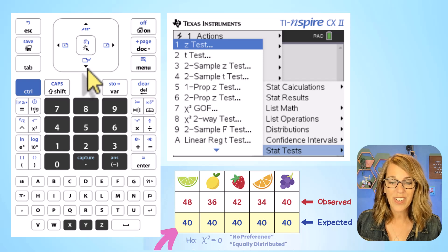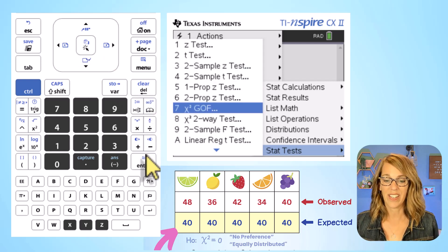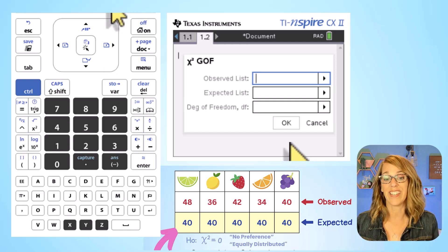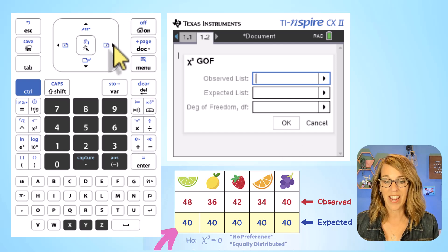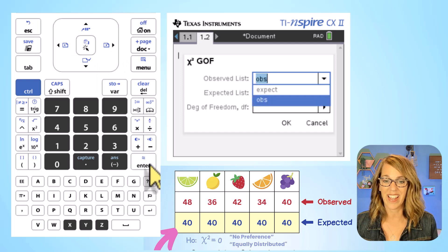We're looking for that goodness of fit, there it is, chi-squared g-o-f, and then let's go ahead and hit enter to choose this. So it wants to know where my observed list is. Using my right arrow, I can choose observed obs and then enter.